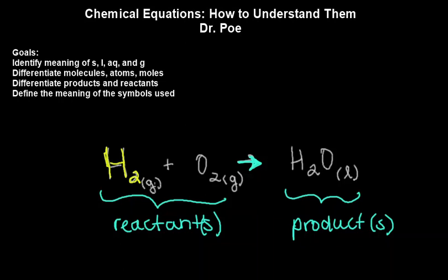So we've got S is solid, L is liquid, AQ means aqueous, so that could be like salt dissolved in water, an aqueous solution, and G, of course, would mean gas. So here we've got hydrogen gas, oxygen gas forming liquid water.